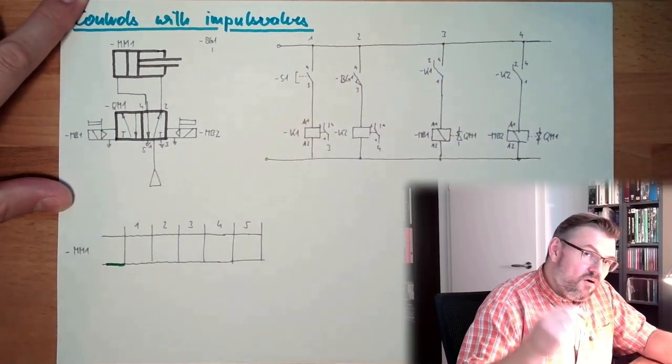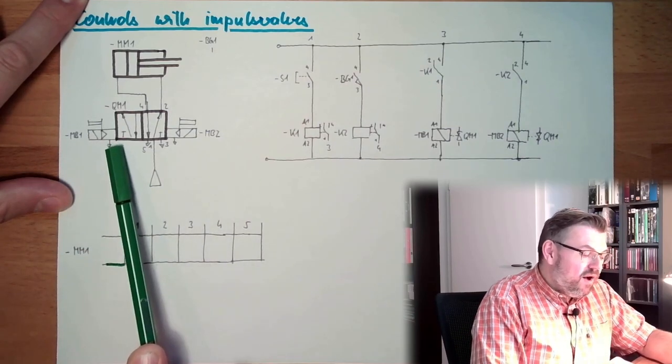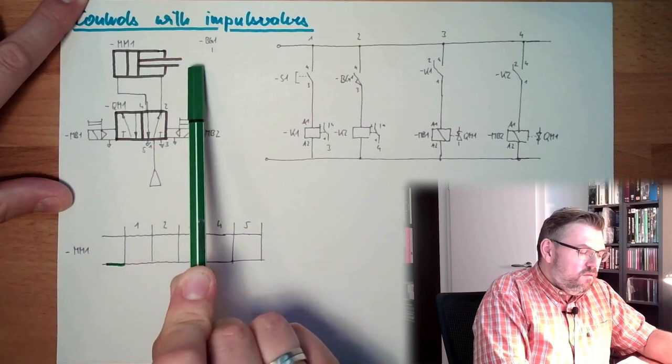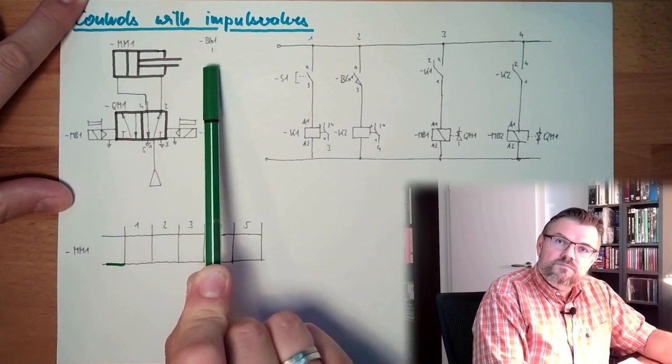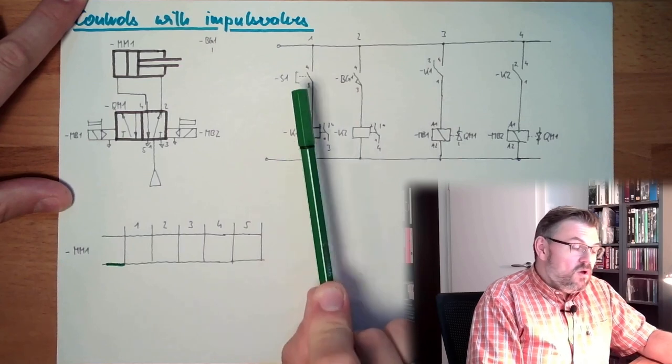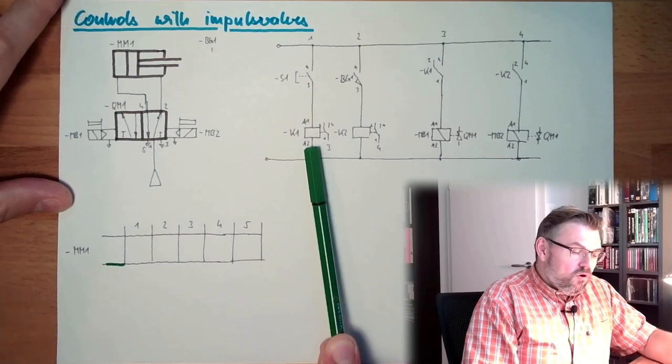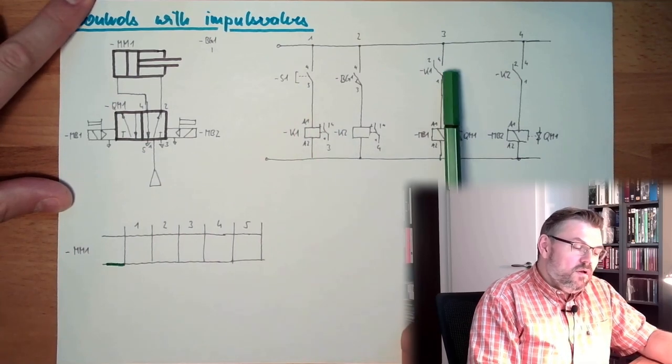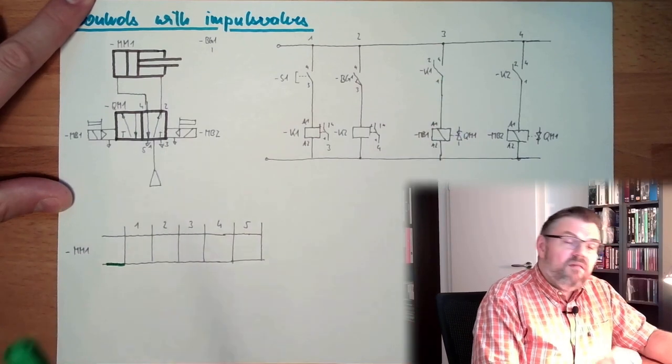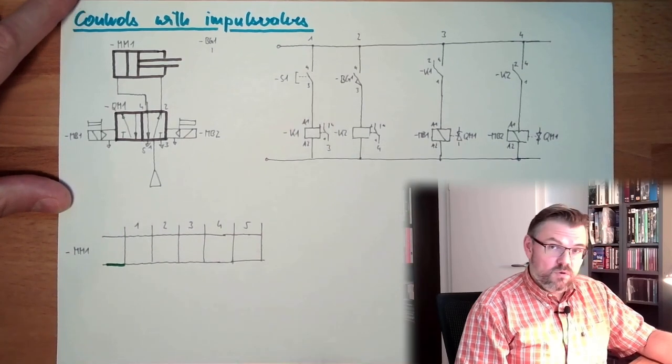MB1 is now energized. This will mean the valve is switched to the other direction. If the valve is switched to the other direction, this is moving outwards. During moving, we can already release S1 because it's an impulse valve. Even if you release S1, this will no longer be energized, this will fall. If this is falling, then this will also be not energized. However, the valve will stay that way, and we will finish the movement, regardless of how long S1 is pressed.